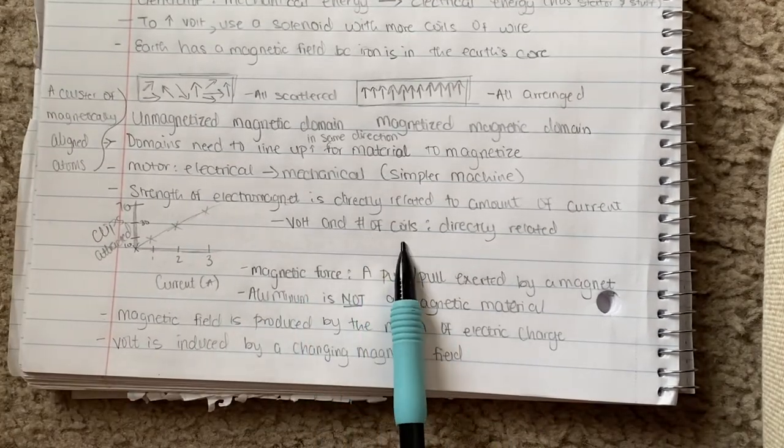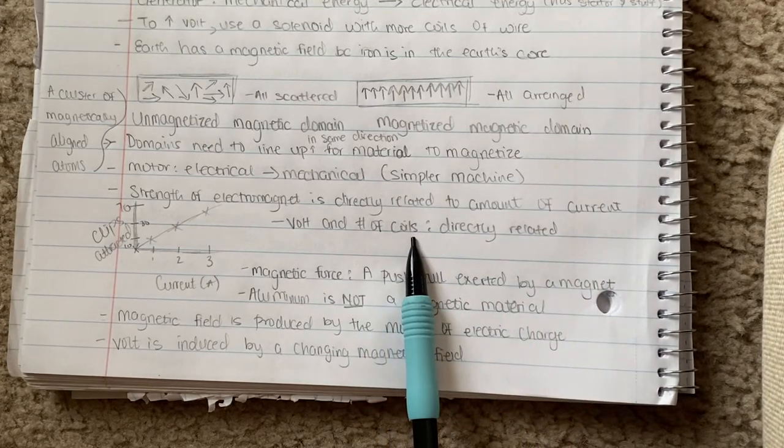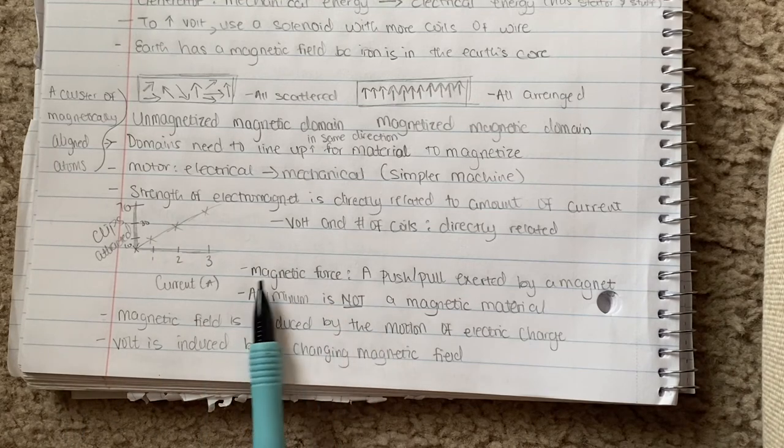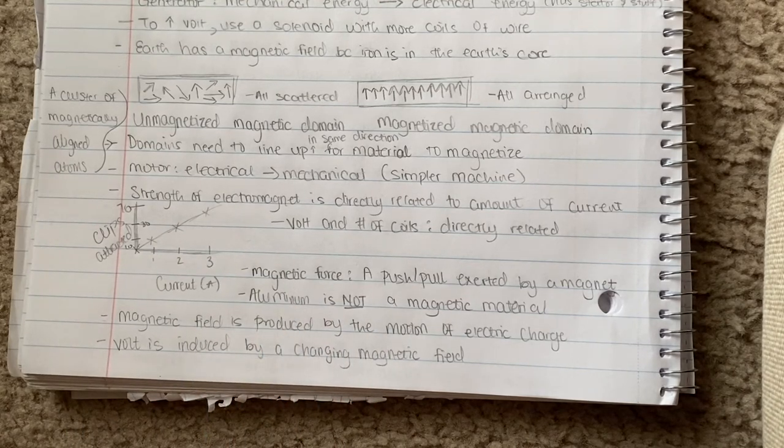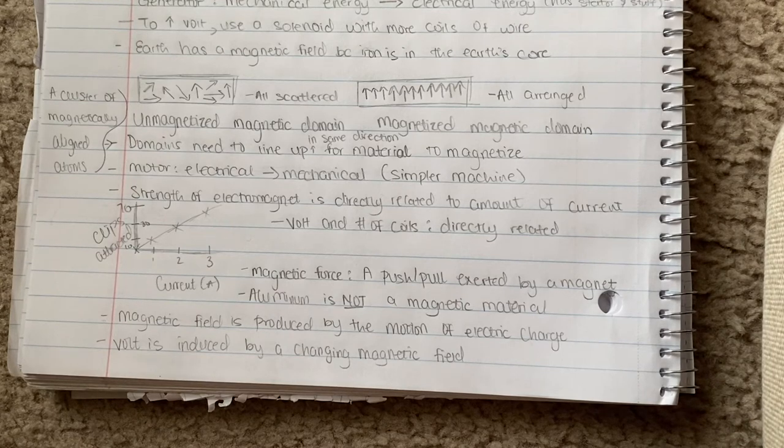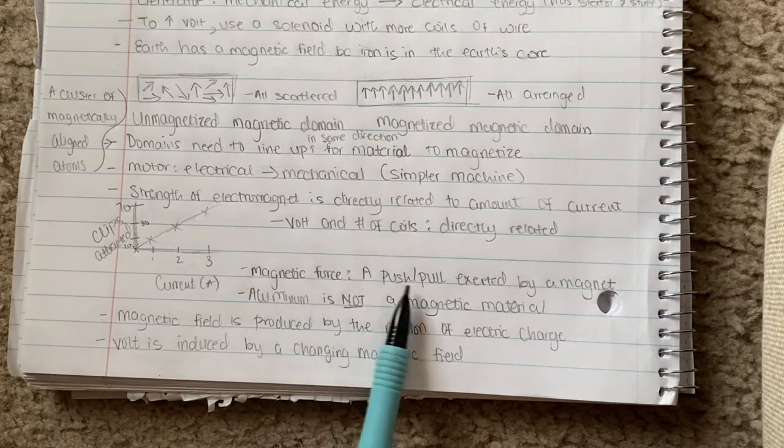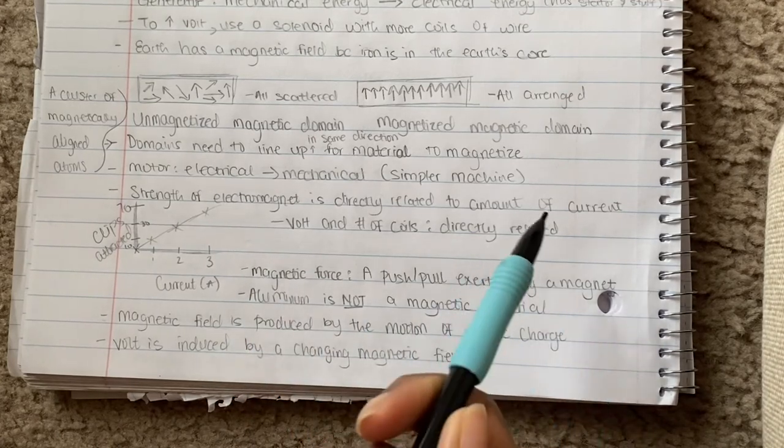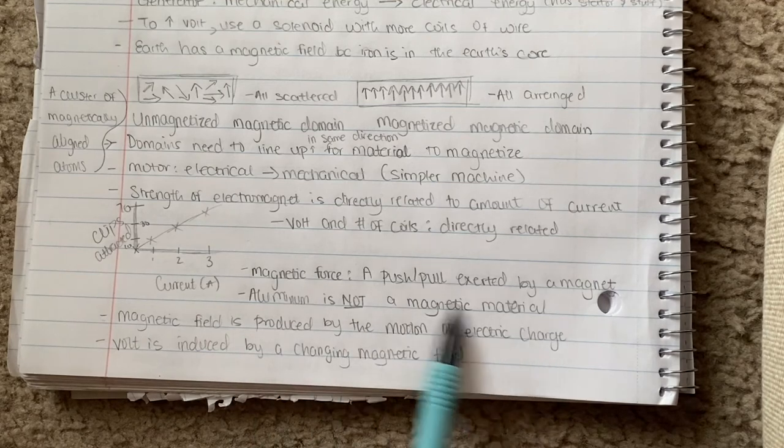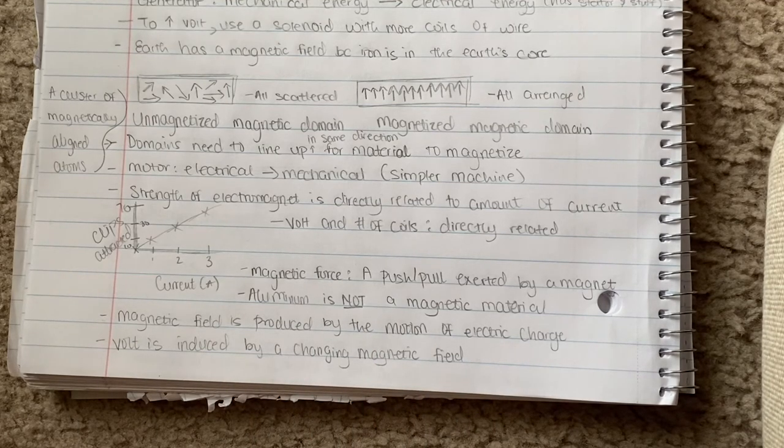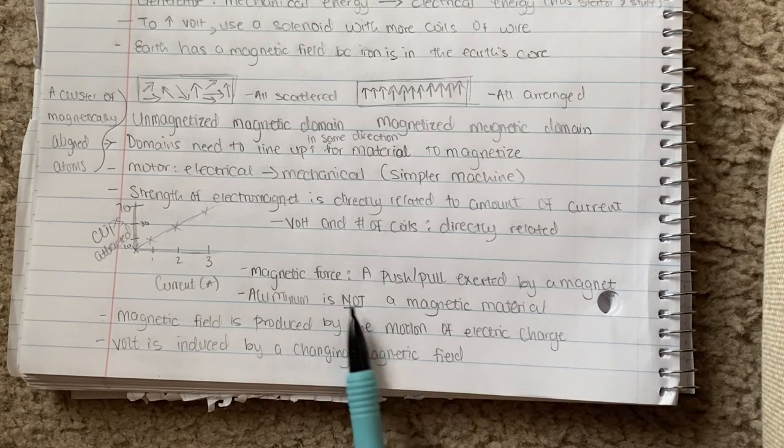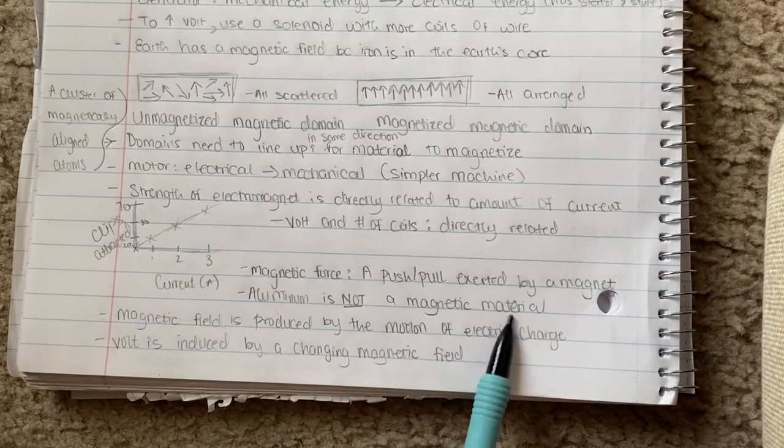Your voltage and number of coils are directly related. If you put more coils around your wire, you increase your voltage. The definition of a magnetic force is a pull or push exerted by a magnet. A force is a push or pull exerted by a magnet. Aluminum is not a magnetic material. I put it down because I didn't know that and I actually got it wrong. If you were to put it in between the coils and stuff and you connected it up to make an electromagnet, it probably wouldn't pick up anything because it's not magnetic.